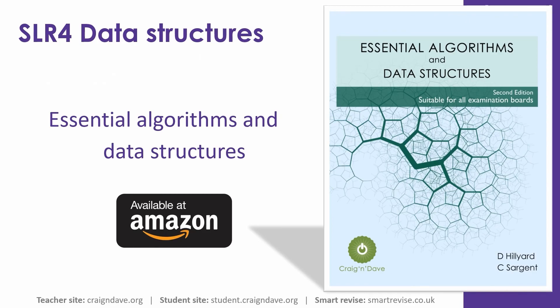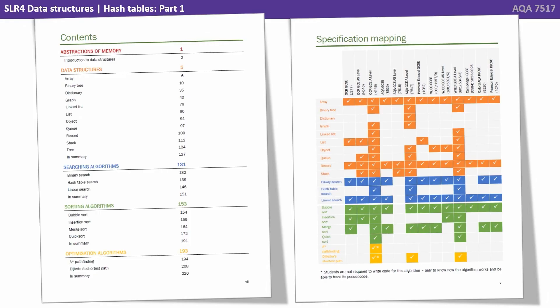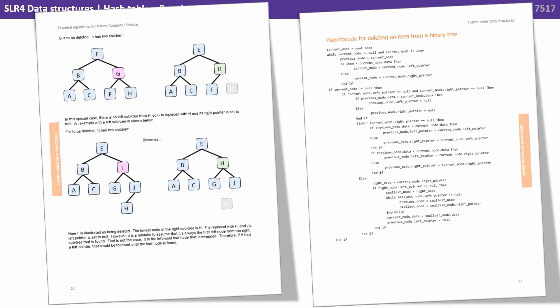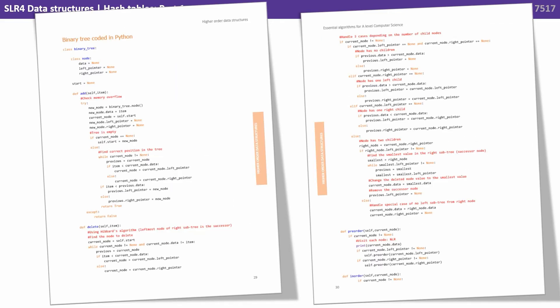Dave and I know that data structures and algorithms are one of the hardest areas of the course, and we've therefore written a dedicated book, which is available to purchase on Amazon. The book covers all the data structures and algorithms you need to be aware of for the exam. Each one has its own dedicated chapter covering the data structure or algorithm, giving you applications, operations, links to our videos online, the algorithm in simple structured English, a visualization, pseudocode, and is fully coded in Python, C-sharp and Visual Basic.